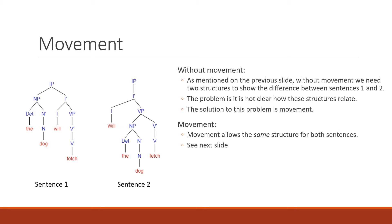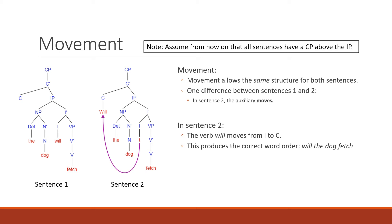The solution is movement: to have an underlying structure and a surface structure. Movement allows the same structure for both sentences. Now we have 'the dog' as the specifier of the IP in both sentences. One difference between sentence one and two is that in sentence two the auxiliary just moves, giving you a new sentence with the auxiliary moving.